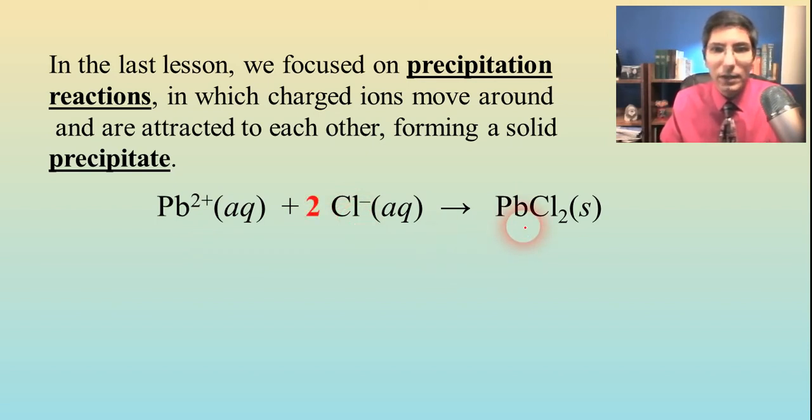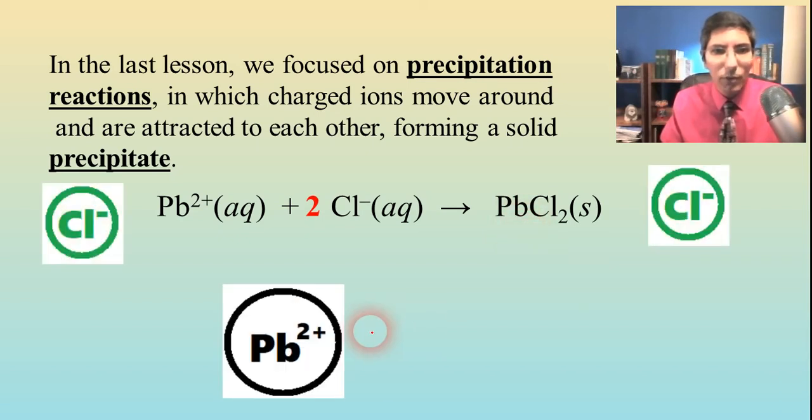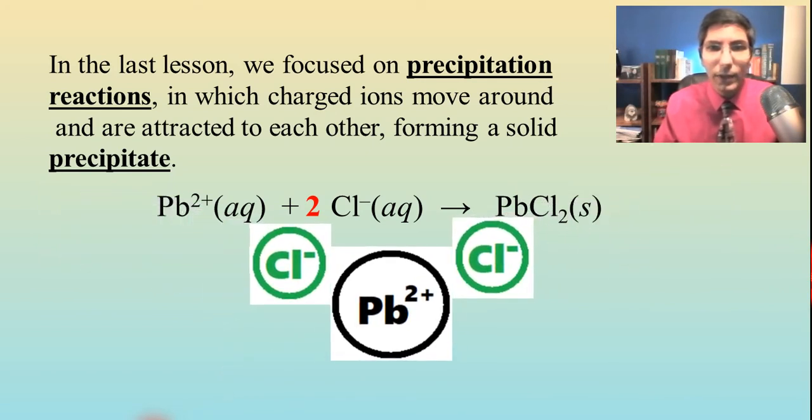Of course, when you balance it, it looks like this. So in the solution, we had these lead ions and some chloride ions swimming around. They were both already charged. Lead had a plus 2 charge, and the chlorides were both negative 1 apiece. They were swimming around in solution. They would find each other like this, and then they would form a precipitate.